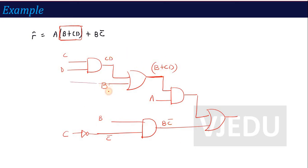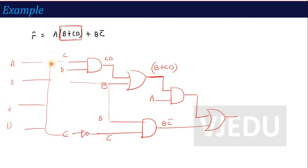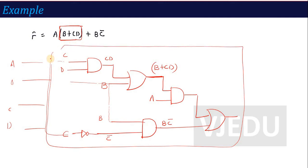The respective inputs that are the same are connected together, and different inputs are connected separately. Finally, this whole circuit can be thought of as a box with 4 inputs A, B, C, and D. This particular box, where different components are connected to perform a particular operation, is called an Integrated Circuit (IC).